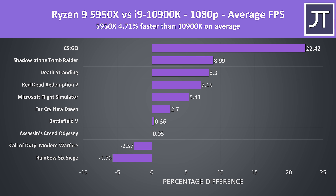On average over these 10 games tested, the Ryzen 9 5950X was almost 5% faster at 1080p. It was slower in two of the games, but for the most part the 5950X was doing better, though that CS:GO result is definitely contributing to the higher overall average. Regardless, still a win for Ryzen.